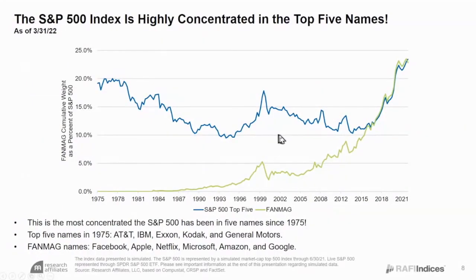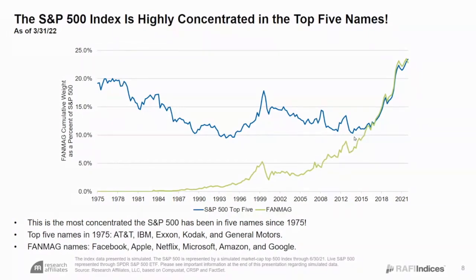Today, the market is highly concentrated. The top five names in the S&P have always been a big part — anywhere from 10% to 20% of the entire S&P 500 in just five names. It reached a peak during the aftermath of the COVID crash. The five largest market cap companies in the U.S. — and the five largest in the world — were all members of what we call the FAN mags: the FANG stocks, plus Apple and Microsoft. Those companies together had an aggregate weight of about 23% as of the end of 2021.